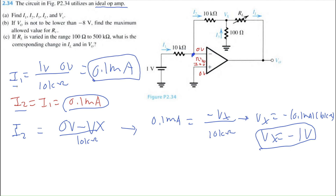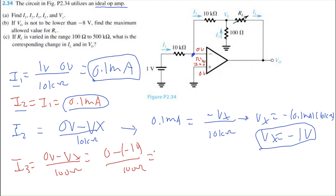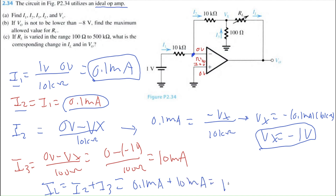Now we can calculate I3. Note that I3 is defined as traveling from ground, so using nodal analysis: I3 equals 0 minus Vx divided by 100 ohms, which is 0 minus negative 1 volt divided by 100 ohms, equal to 10 milli-amps. For IL, using KCL, all current into a node equals all current out. I2 and I3 flow into this node and IL flows out, so IL equals I2 plus I3: 0.1 milli-amps plus 10 milli-amps equals 10.1 milli-amps.